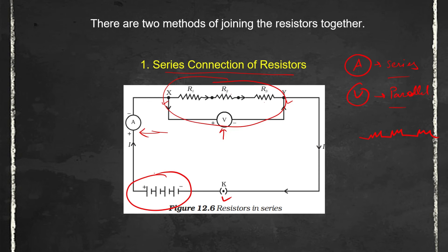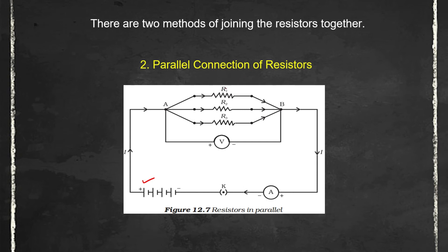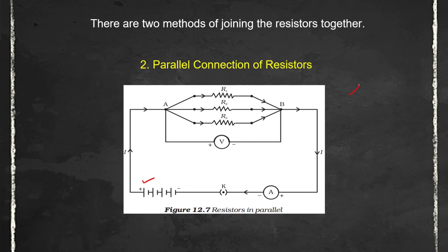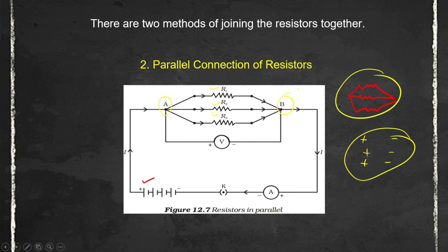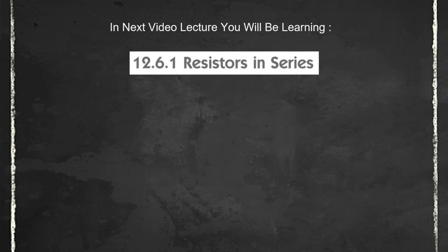Another way to connect resistors is in parallel connection. In the parallel circuit example, note the difference: in series all resistors are connected end-to-end, but in parallel the first, second, and third resistors are each connected side by side. At point A, all the left-hand terminals of the resistors are connected together, and at point B, all the right-hand terminals are connected together — they share the same terminals. This type of arrangement is known as parallel connection.